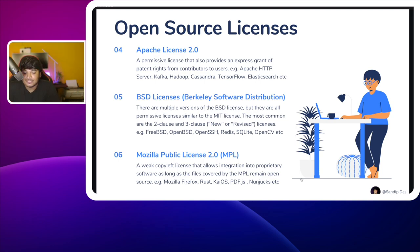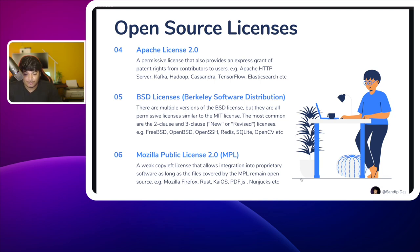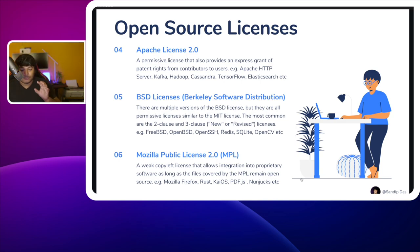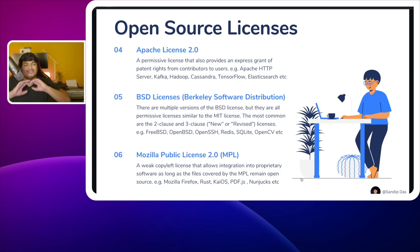The sixth license is the Mozilla Public License 2.0, or MPL. It's a weak copyleft license that allows integration into proprietary software as long as the files covered by the MPL remain open source. Examples include Mozilla Firefox, Rust, KaiOS, PDF.js, and Nunjucks.